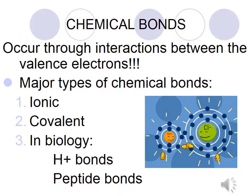Chemical bonds occur through interactions between the valence electrons — the electrons in the outermost ring. The major types of chemical bonds we will cover in biology are ionic, covalent, hydrogen bonds, and peptide bonds.